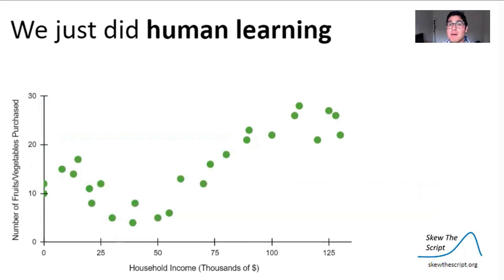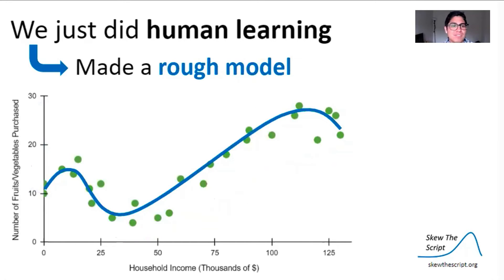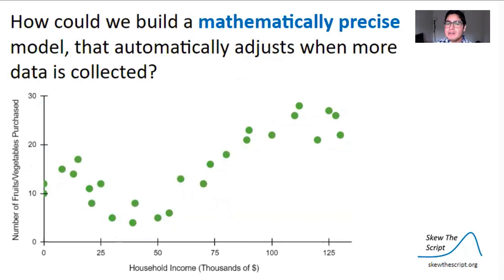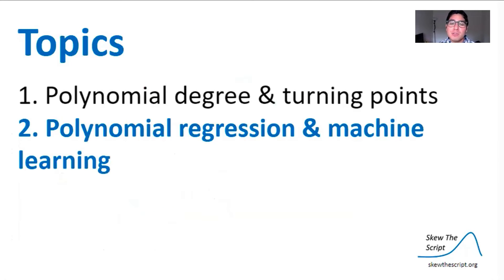What we just did is not machine learning, but human learning. We identified patterns by eye and made a rough model we could use to predict future customer spending based on income. To build a mathematically precise model that automatically adjusts when more data is collected, we need to harness the power of computers. Now let's take a look at machine learning — specifically, what polynomial regression has to do with it.